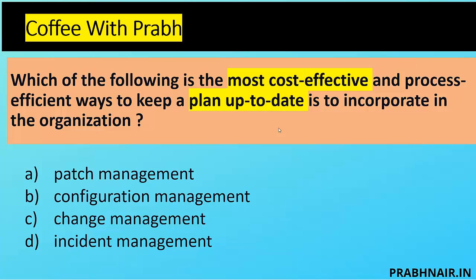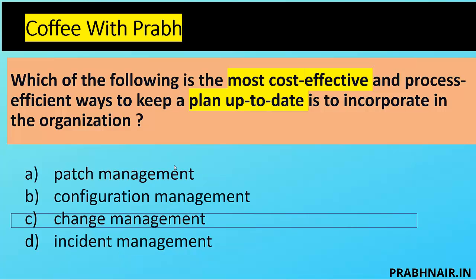Which of the following is the most cost-effective and process-efficient way to keep the plan up to date? Patch management is a one-time activity. Configuration management manages configuration. Incident management reduces impact. Change management is about tracking changes. When doing DR testing, any gap identified — even in configuration — must go through the change management process to update the BCP and DR plan. Raising a change request is how we update the plan, so the answer is C, change management.